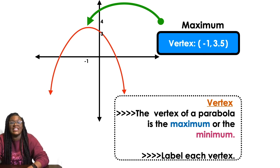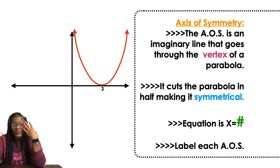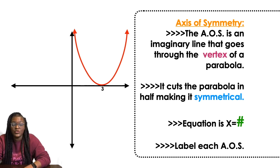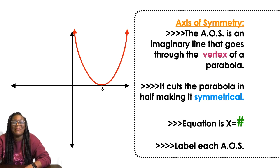The last one was a minimum, this one in this case is a maximum. So now let's talk about the axis of symmetry. The axis of symmetry is an imaginary line that goes through the vertex of a parabola. The vertex is right in the middle. It cuts the parabola in half, making it symmetrical, like your beautiful face. Parabolas are symmetrical.